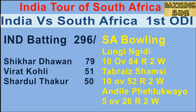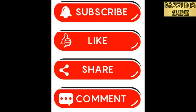India finish on 265 for eight and South Africa have won this match comfortably by 31 runs. South Africa have been in control since they got India's second wicket and their bowling attack has proved they deserve this victory. Key players from India: Dhawan 79, Kohli 51 and Thakur 50. From South Africa's bowling side, Nagidi took two wickets, Shamsi took two and Felcio took two. Leave your comments about how you think this three-ODI series will end, please subscribe the channel if you haven't already, and do like, share and comment on the video. Thank you.